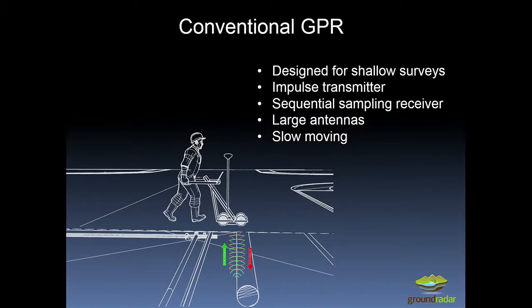These things are designed for shallow surveys, and of course they use a very simple impulse transmitter, and they don't have to do much. They only have to penetrate about two or three meters to see those pipes. But for mineral exploration, obviously, we need to go a lot deeper and make them a little bit more robust and field worthy.